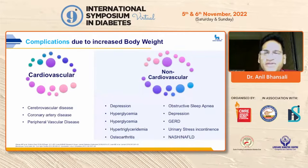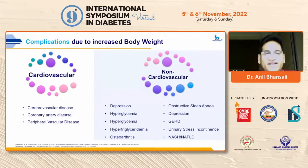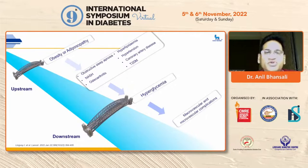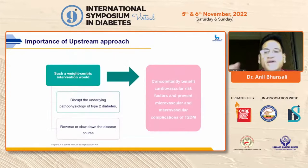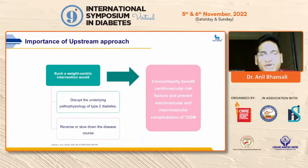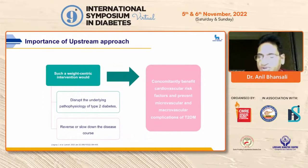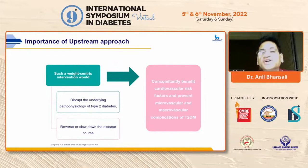Complications due to increased body weight include both cardiovascular and non-cardiovascular, with non-cardiovascular complications being quite numerous. The upstream approach means targeting obesity — now also called adiposity or adiposopathy — and in the downstream area, not waiting until hyperglycemia develops. Weight-centric intervention would disrupt the underlying pathophysiology of type 2 diabetes. The ticking clock hypothesis states that cardiovascular risk factors and complications start arising even before the emergence of hyperglycemia.